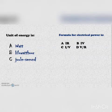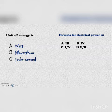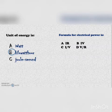The unit of energy is watt, kilowatt, or joule per second — the correct answer is kilowatt. The formula for electric power — options: A) IR, B) IV, C) I over V, D) V by R — the correct option is IV (I times V).